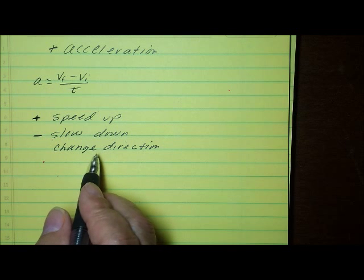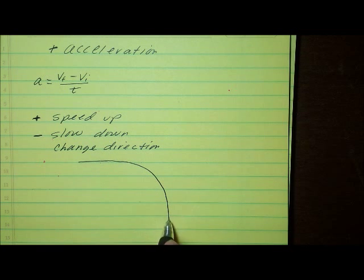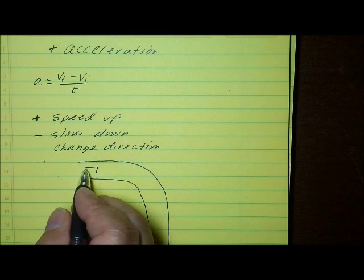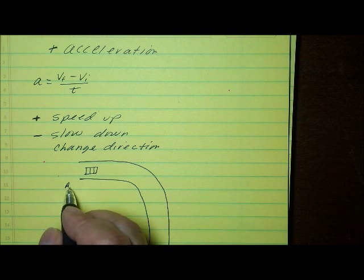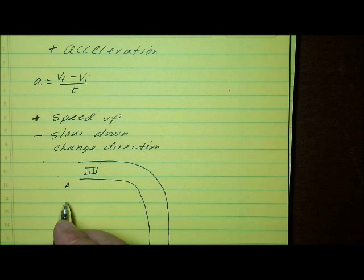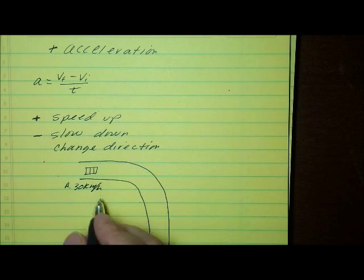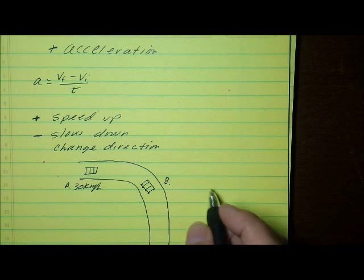A change in direction also indicates that an object is accelerating. Let's look at this scenario: take a car on a road that goes around a curve. Looking down at the top of the car, at point A, if the driver looks at the speedometer, he might see that it reads 30 kilometers per hour.